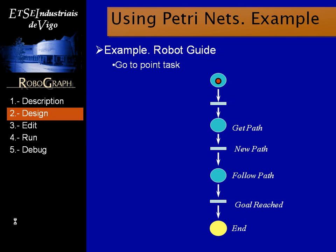The go to point Petri Net will receive the goal point coordinates. This is the sequence that the dispatch will execute. First, the dispatch will command the path planner module to get the path from the robot's current position to the goal. This is done by sending the corresponding message to the path planner module. The path planner module should publish a message with the path. When dispatch receives that message, it sends another message to the reactive control module to follow the path. When the reactive control reaches the goal, it will send a message. The dispatch receives the message and concludes the Petri Net.